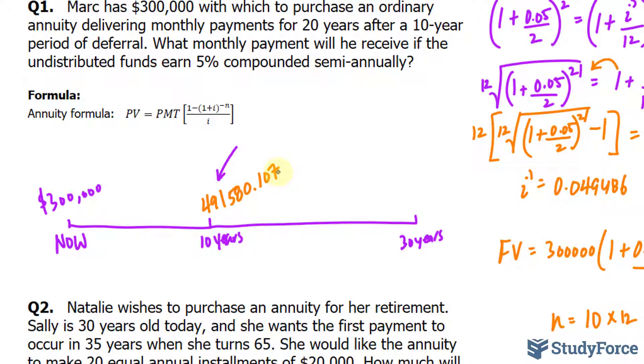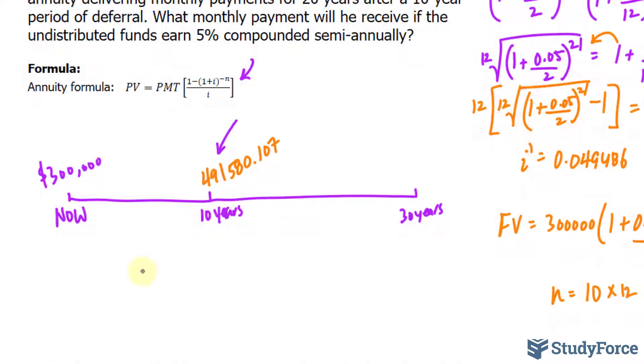Now, we will use the formula that's on the screen to find out the payments that will be paid out every month starting 10 years from today up until the 30-year mark. The present value at the 10-year mark is 491580.107. We're looking for the payment, which is represented as PMT.